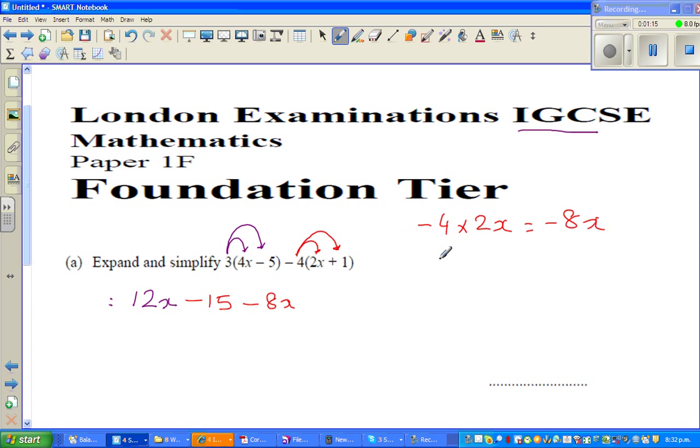Again, you're multiplying with negative 4. This is where most of you can go wrong. Negative 4 times 1 is negative 4. Now the next step I call grouping. It's always good to group the like terms, so it's 12x from here and you've got a minus...